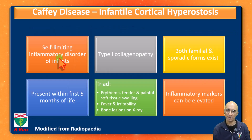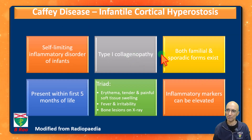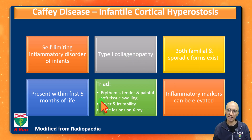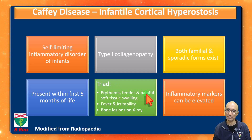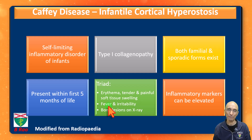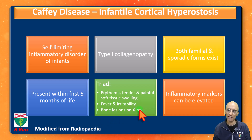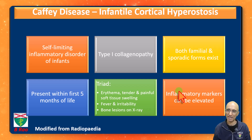This is a self-limiting inflammatory disorder, considered to be a type 1 collagenopathy. It is seen in both familial and sporadic cases, and usually presents within the first five months of life. It classically presents with a triad of erythema, tenderness, and painful soft tissue swelling, as we saw in our baby. They can also have fever and irritability, and as we saw in our case, laminated new bone formation on the radiographs. Inflammatory markers can be elevated.